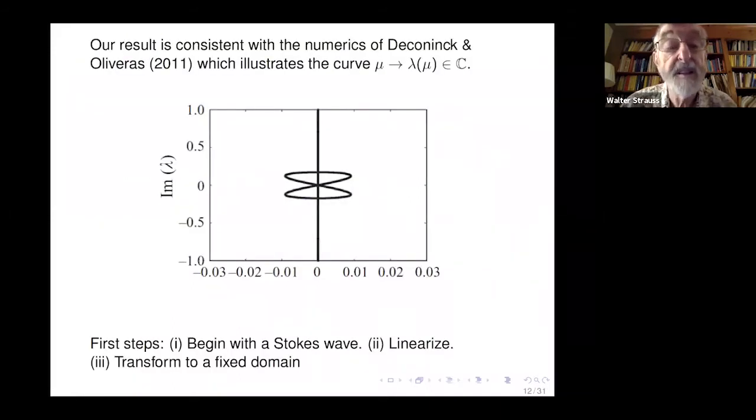Our result is consistent with numerics of De Connick and Oliveras, which I took this picture from. This is the curve as a function of mu in the complex plane. Here's the real part. It's consistent. Notice it's a very flat curve, this figure eight is very flat. Notice the scale on the x-axis.